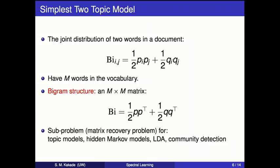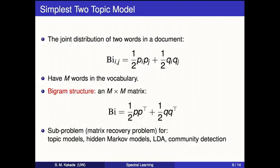We're sampling the count matrix by putting a dot with probability P_i * P_j + Q_i * Q_j. The expected matrix is the rank-two matrix PP^T + QQ^T. This is a sub-problem for estimating topic models, hidden Markov models, LDA, and community detection. The claim is this generalizes to many other richer latent variable settings. The question is how do we estimate P and Q?